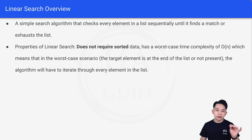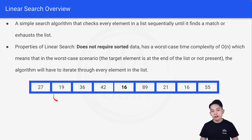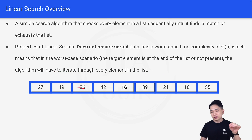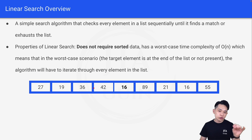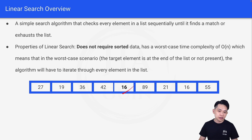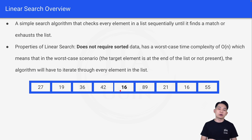For example, let's look at this list here. Let's say we are searching for 55. At the worst-case time complexity, it means that we have to search 27, 19, 36, and so on until we reach the end of the list to get 55. So this is the worst-case time complexity. And let's say we are just searching for 16 — it's just going to be n over 2. But we always consider the worst-case time complexity.